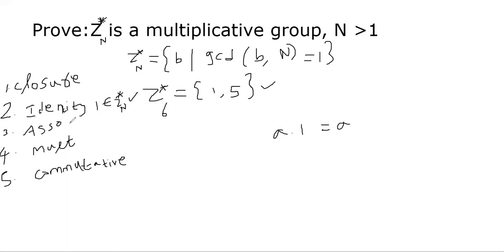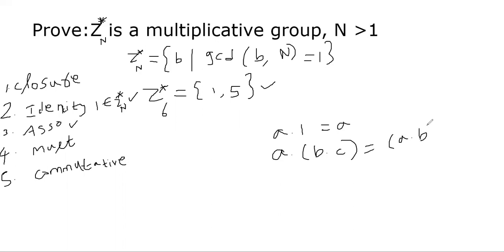Associative property is true because when you multiply three numbers in different orders, you get the same answer — a times (b times c) is the same as (a times b) times c. This is true in integers, and this is also true in modular integers. So no need to worry about the associative multiplicative property.